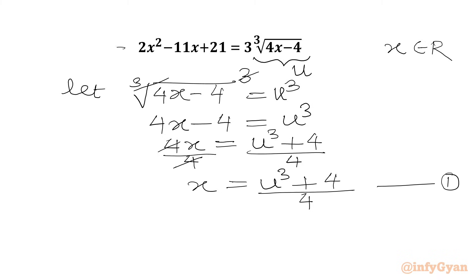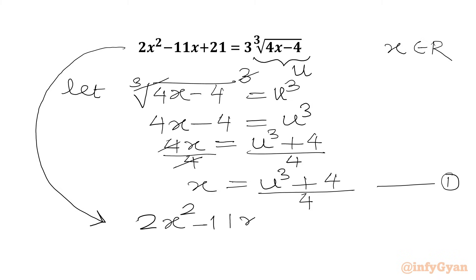Now we will write our equation after substitution. We will be writing 2x squared minus 11x plus 21 equal to 3u. This is equation number 2. Now we will put the value of x in terms of u from equation 1 into equation 2.